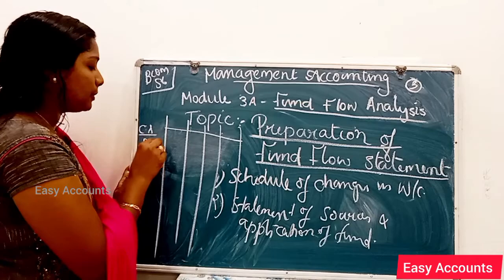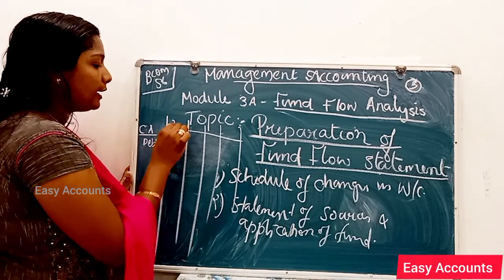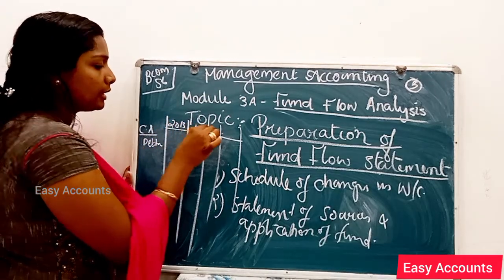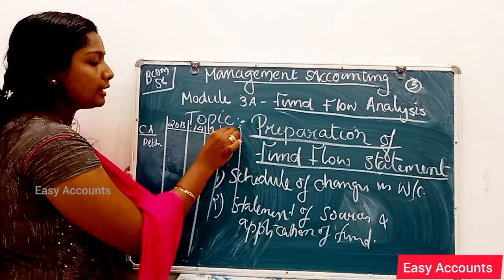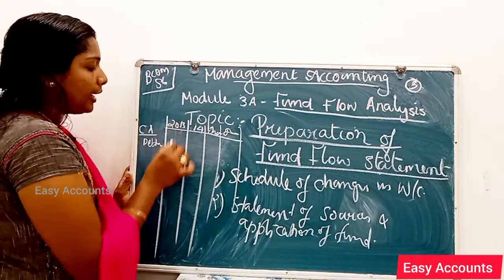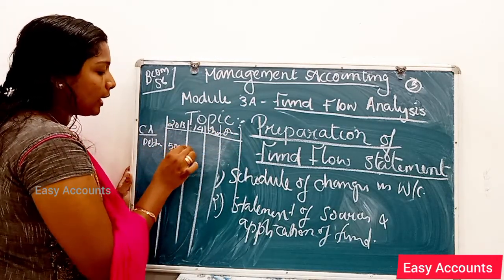The first item is debtors. We look at the figure for 2013 and compare it to the figure for 2014 to find the increase or decrease. In the working capital schedule, if a current asset increases, it increases working capital; if it decreases, it decreases working capital.